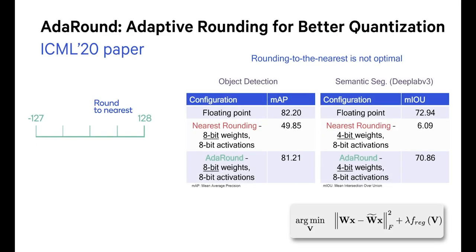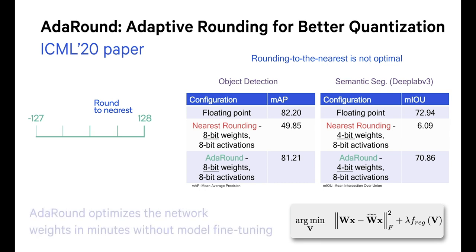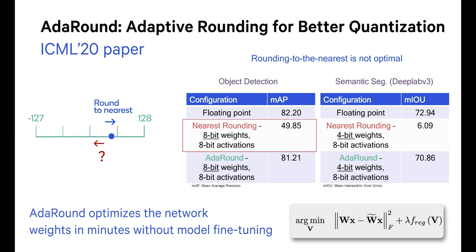AdAround, which stands for Adaptive Rounding, is a post-training quantization technique, so it requires only minimal unlabeled data and no model fine-tuning. Rather than rounding to the nearest value during quantization, AdAround automates finding the best rounding choice in order to retain model accuracy.